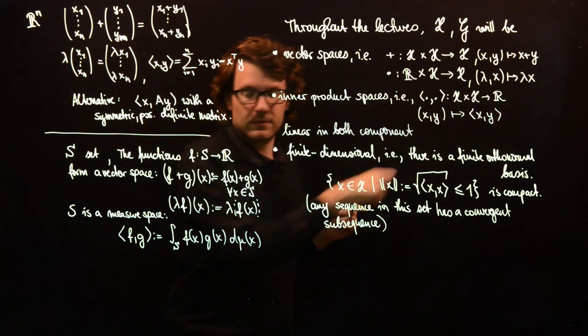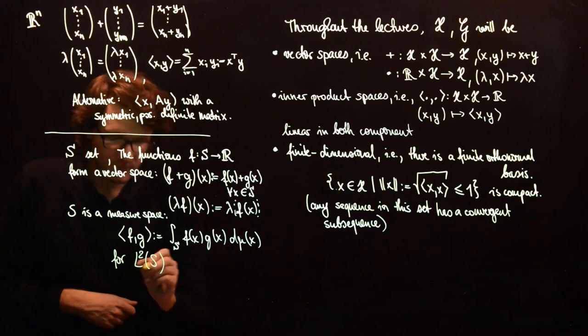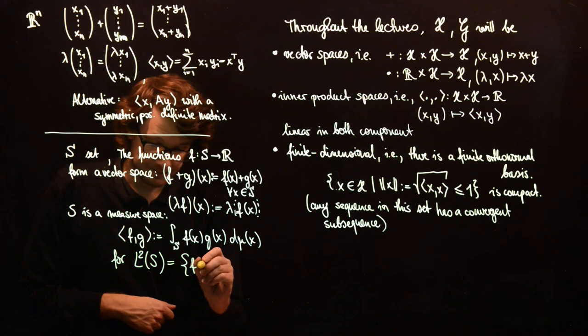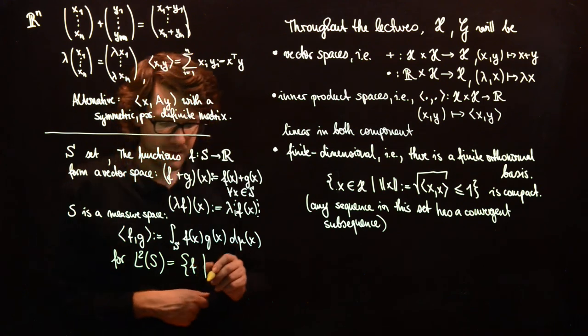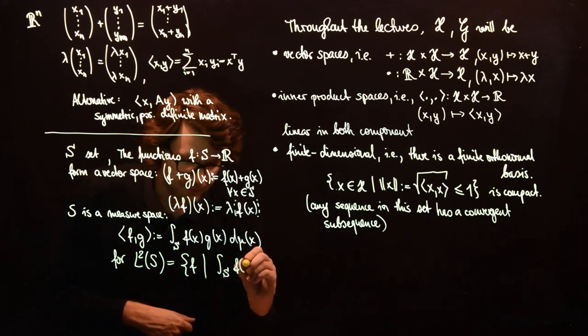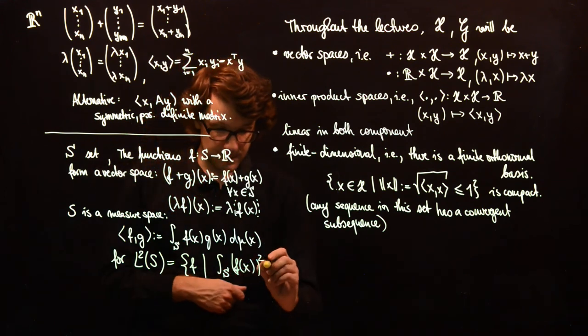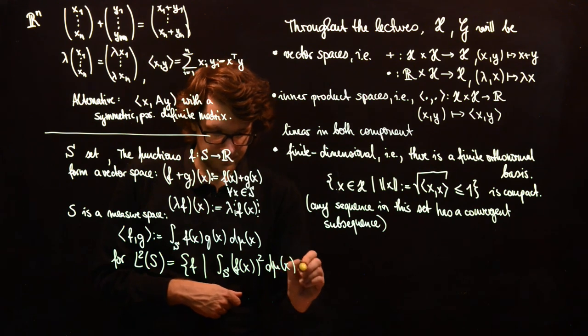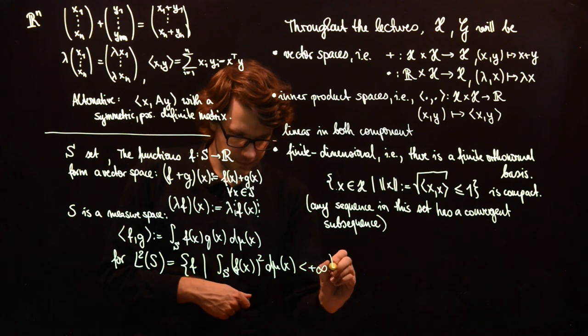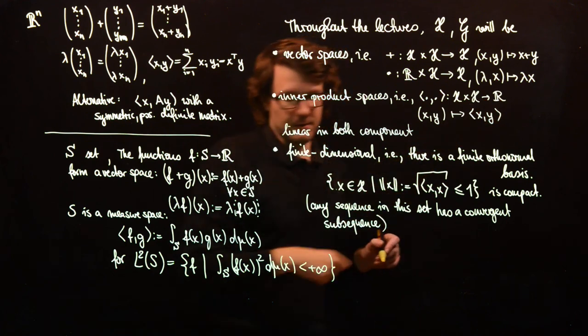But then, as you see, you have to get a real number out of it, so you have to restrict this to L2 of S. And this will be the set of functions F such that the integral over F of X squared dμ of X is finite. You have to assume this, otherwise you don't get real values out of your inner product.